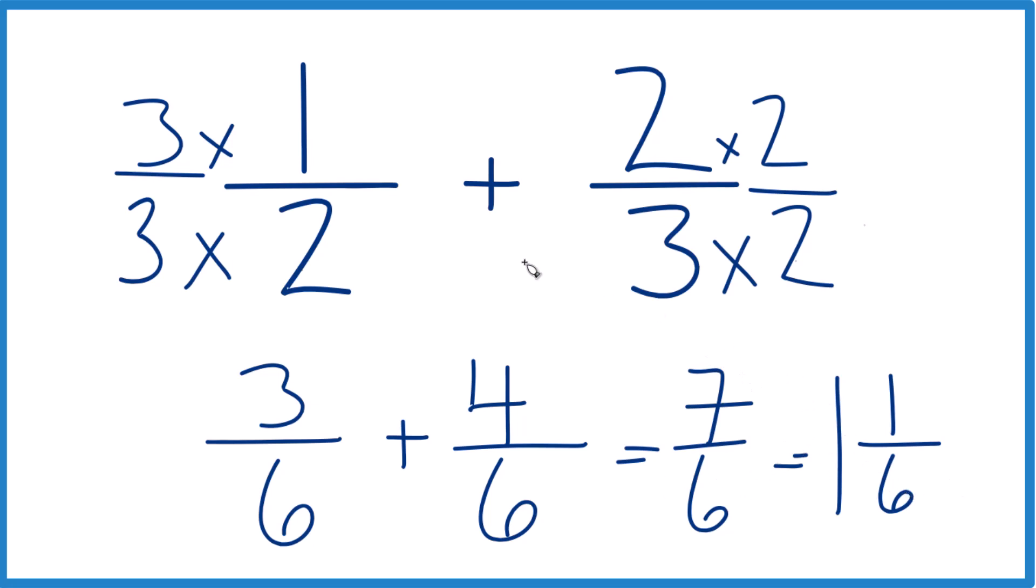So in answer to our question, 1 half plus 2 thirds is going to equal 7/6, or if you want a mixed number, 1 and 1 sixth. This is Dr. B. Thanks for watching.